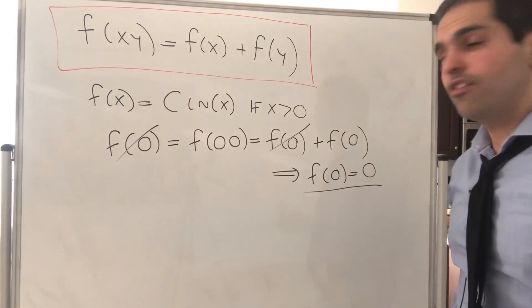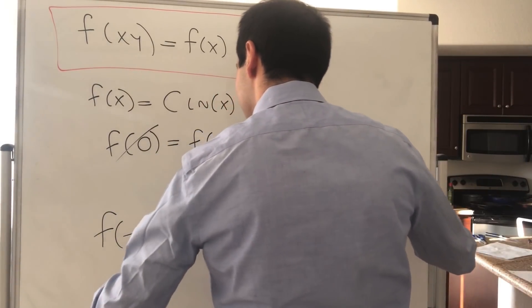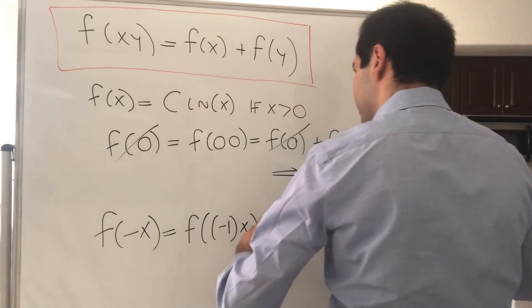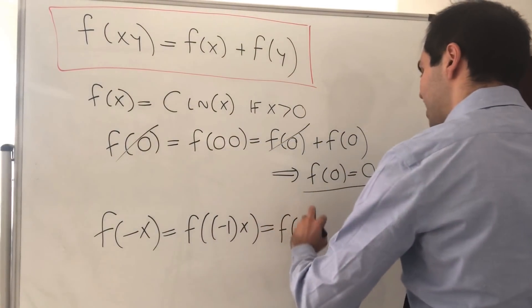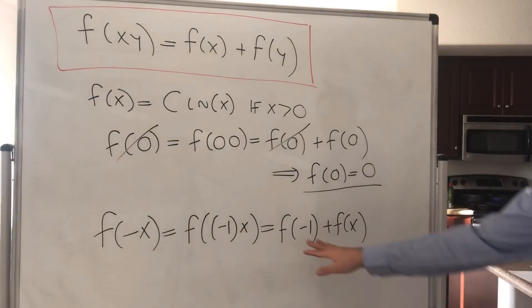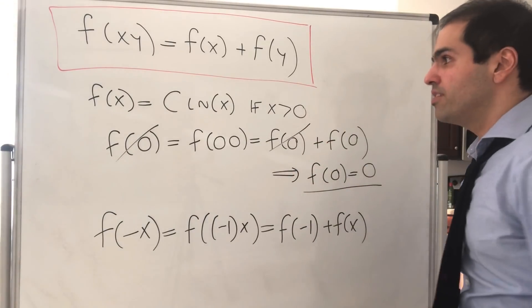And now what about for negative x? Well, notice f of negative x, that is f of negative 1 times x, and that becomes f of negative 1 plus f of x. But the question is, what is f of negative 1? Well, notice the following thing.